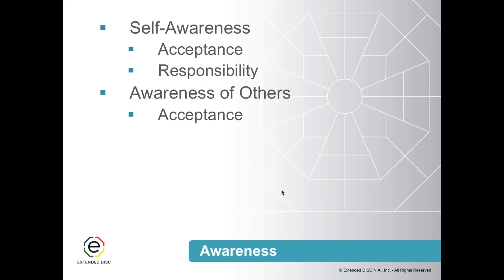An example is the S style, which really values fairness and trustworthiness. They see a lot of things as promises, whereas other styles see them only as intent. A casual comment like 'let's have lunch next week' — the S style will take that literally, and when the call doesn't come, they feel hurt and let down, wondering why that person made the comment and didn't follow through.